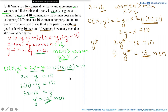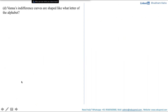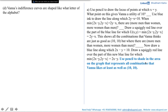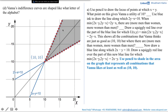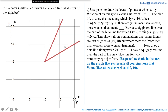The question might seem complex at first, but just break it down into sub-parts: note what information you have, how you can break it down, and what the question is asking. Moving to the next part: Vanna's indifference curves are shaped like what letter of the alphabet? From part A, the shaded region on the graph representing all combinations Vanna likes at least as well as (10, 10) gives us an indifference curve shaped like the letter V. The answer is V.